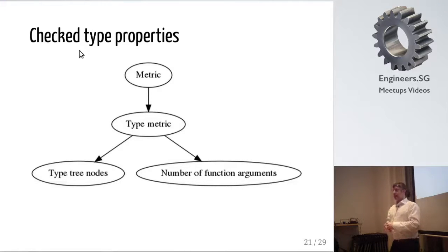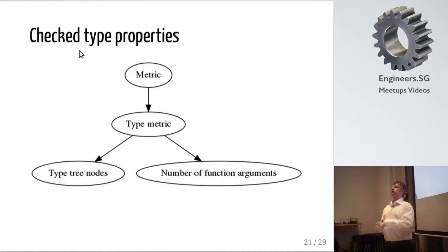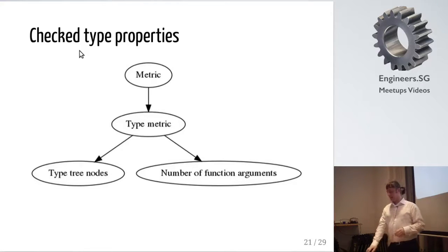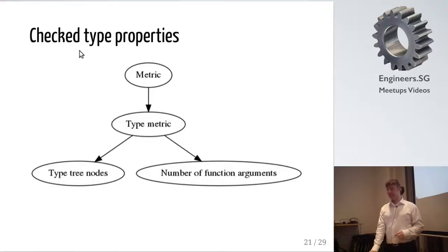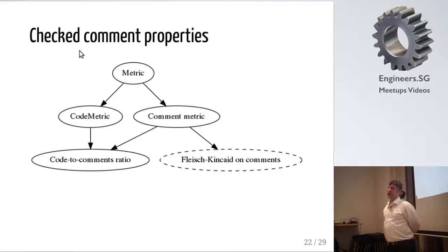There is also a metric for the number of function arguments. I basically analyze all the type signatures within the code and for each of them make these checks. If there are other suggestions, I welcome them. This doesn't include type classes for now.